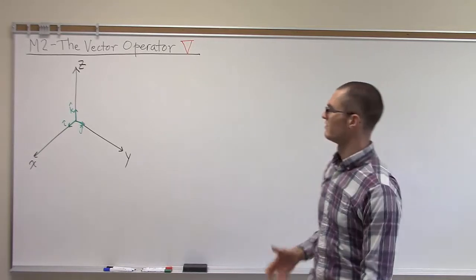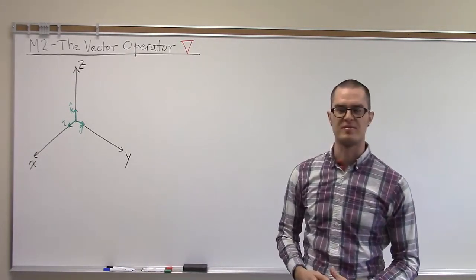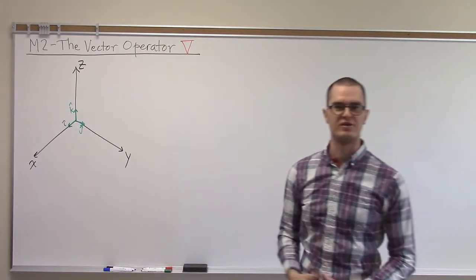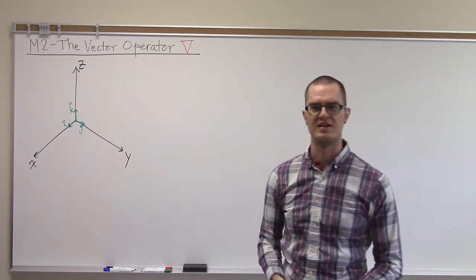This series is going to look at what we call the vector operator, sometimes called the nabla symbol. It's this sort of upside down triangle to try to understand what does that symbol mean and how do we use it.